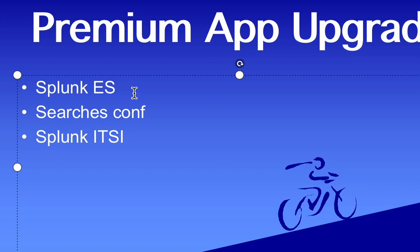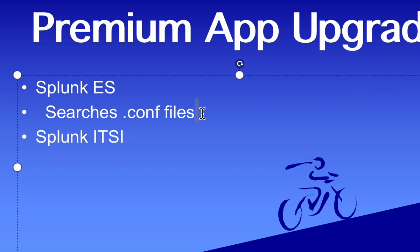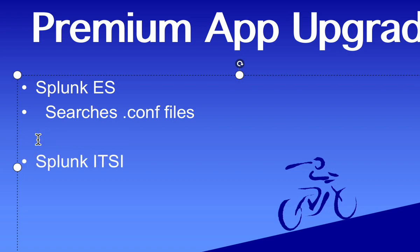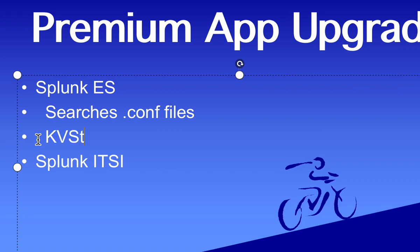The second thing to consider is KV store, which is also very crucial. You need to take a backup of KV store before performing the upgrade. In Enterprise Security, KV store plays a major role — notables and many other things are stored there, not in .conf files. Searches are stored in .conf files, but the calculations and other data are stored in KV store, so please take a backup of it.